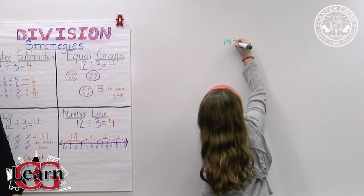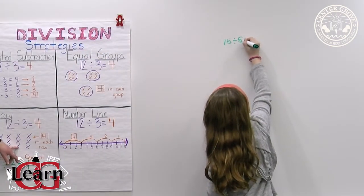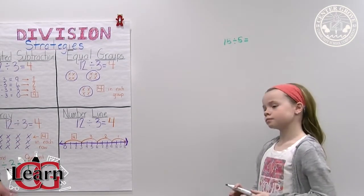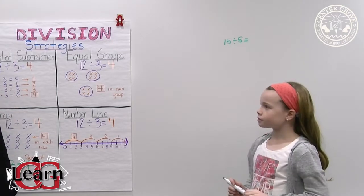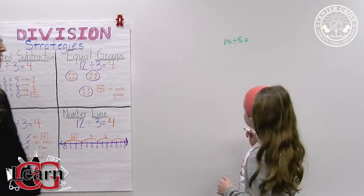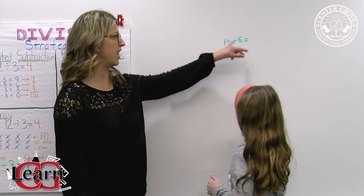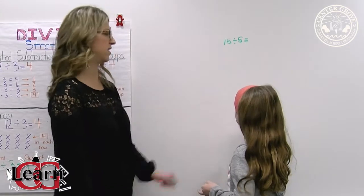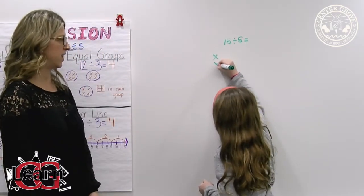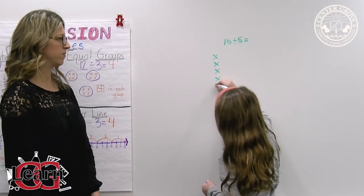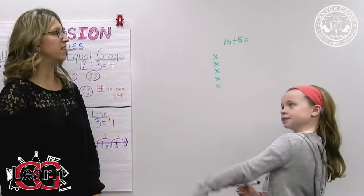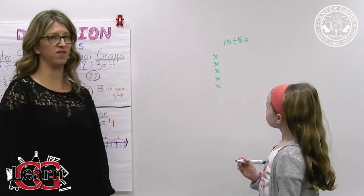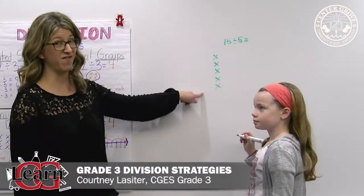But this time we're going to show it with the array strategy. And so arrays are really similar to equal groups. The only difference is we are wanting nice neat rows and columns. So this time we're going to again see that we want 15 divided by 5. So we're going to put 5 X's in a nice straight line. Okay, and so now she's going to continue adding an X to each row until she gets to 15. The trick here is she has to remember she's already done 5.